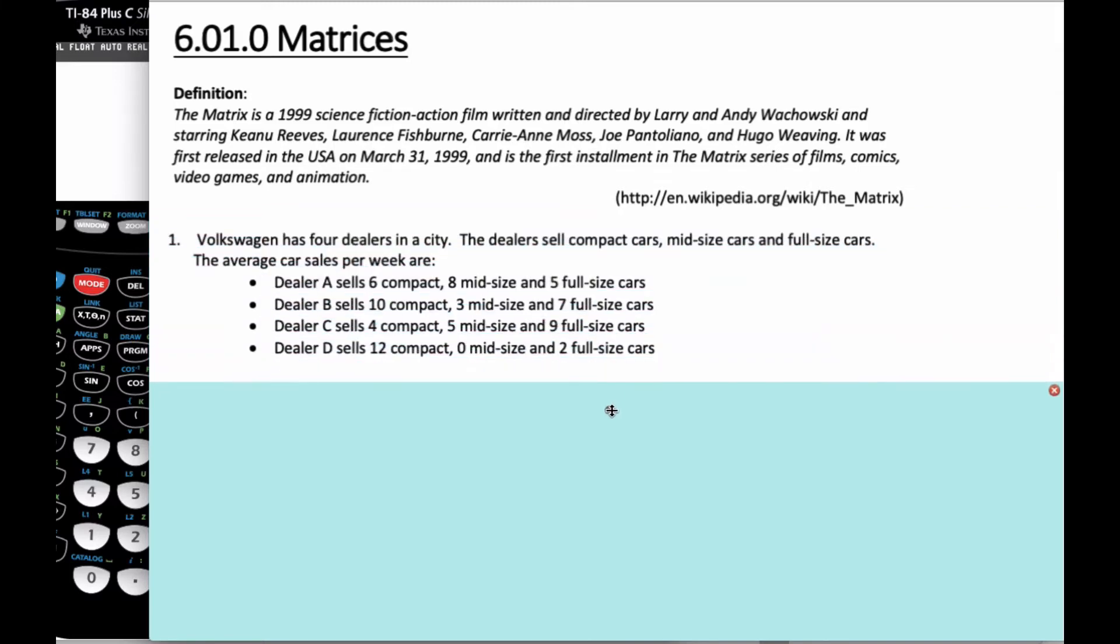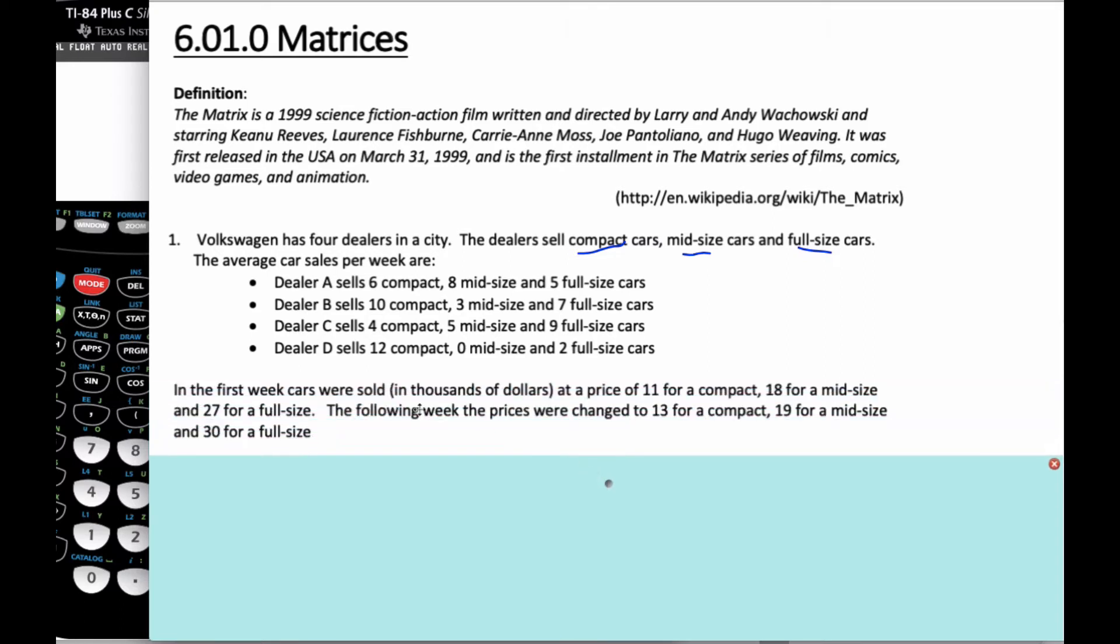You can take the time and read what the definition of a matrix is, which is always good fun. But here is a scenario about what we're given. Volkswagen has four dealers in a city. The dealers sell compact cars, mid-size cars, and full-size cars. The average sales per week for each dealer are given. In the first week, cars were sold at thousands of dollars at a price of $11 for compact, $18,000 for mid-size, and $27 for full-size. The following week they changed the prices. So now we have a bunch of scenarios to consider.